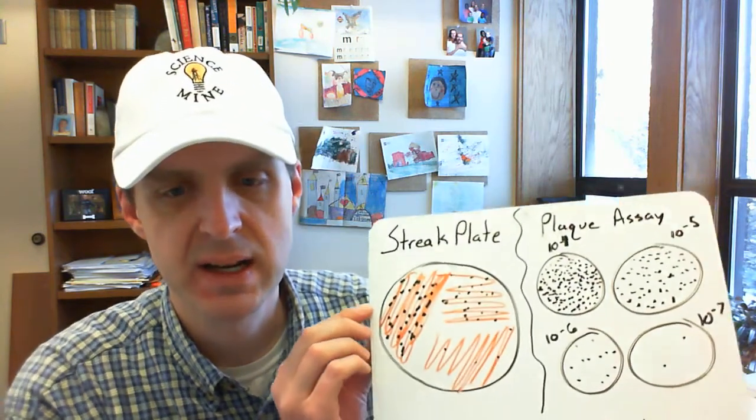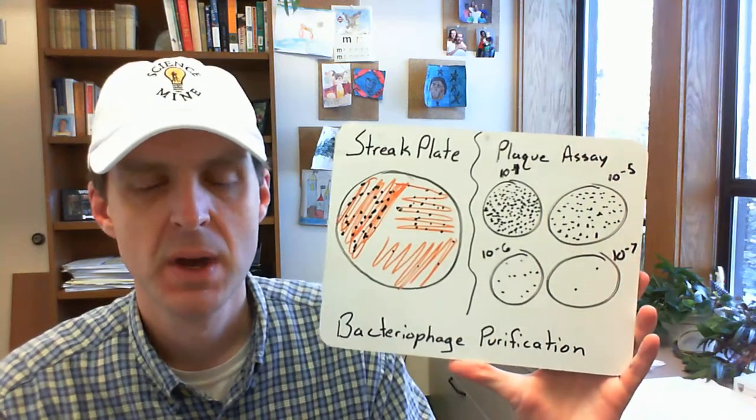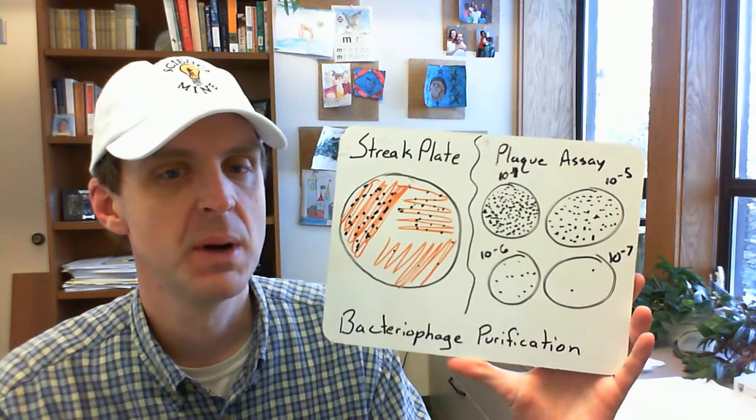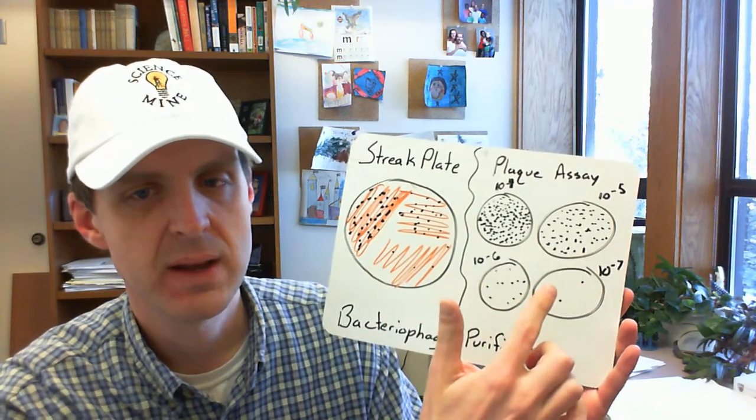However at Montana Tech for years people have been using something called a streak plate to purify their virus. So I want to just take a second to compare and contrast these two different options for trying to get a pure plaque. On the left here we've got a streak plate and on the right you have a plaque assay.